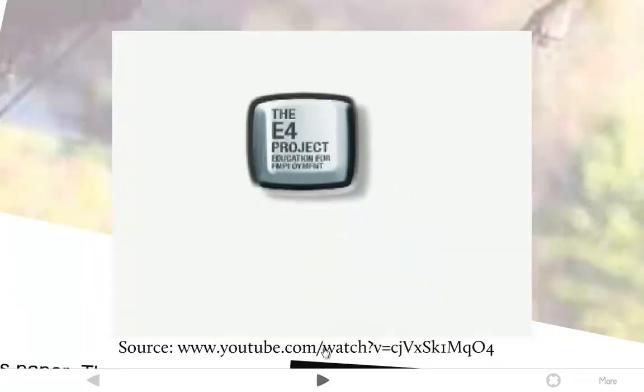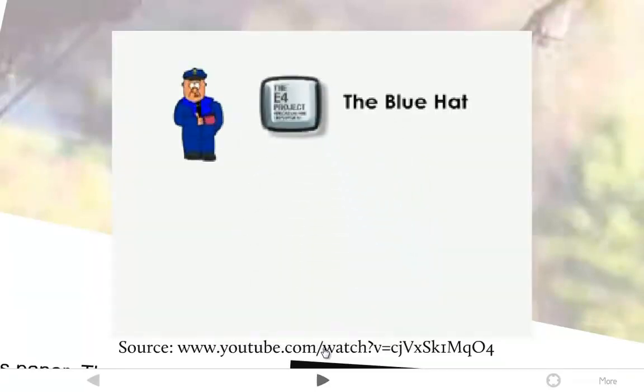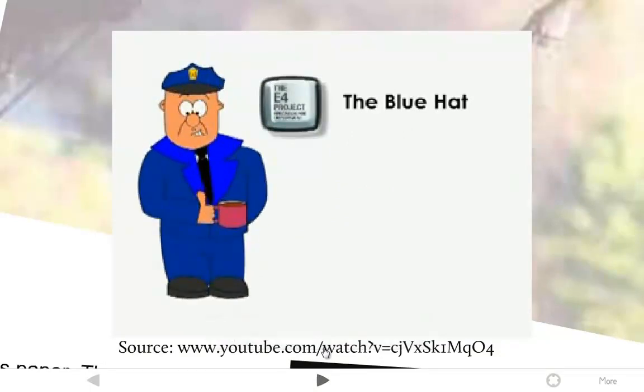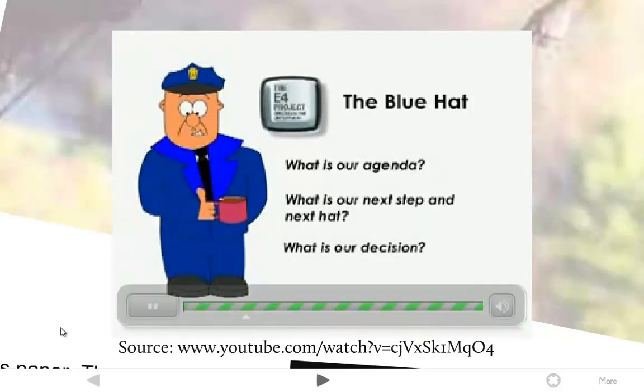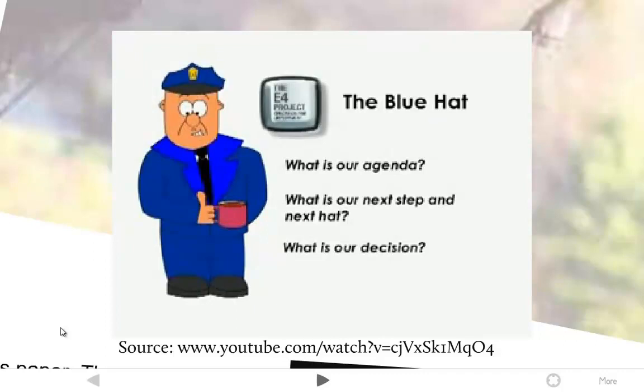The blue hat is called the facilitator hat. It focuses on structuring. Think of the sky and overview. The blue hat asks: what is our agenda, what is our next step and next hat, what is our decision. The blue hat is the role of the facilitator. It can be worn by any member of the meeting. It focuses and refocuses thinking and asks for a summary of the thinking.